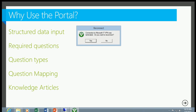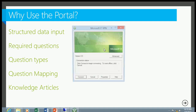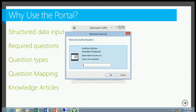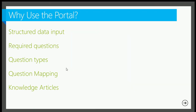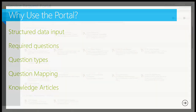From a question mapping perspective, we take that data and put it back in the service request somewhere — either into existing fields or custom fields we create. There are ways to take that data and automate off of it. One feature people don't often talk about is knowledge-based articles: as the user goes in to submit their request, we provide links that might solve their problem, resulting in one less request submitted to us.